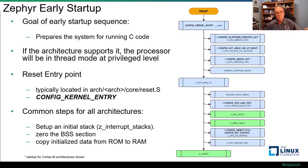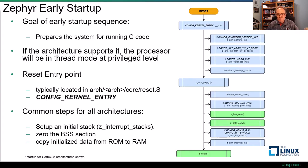The NXP LPC54114 also uses this hook to handle dual-core operation. The platform has an M0+ and an M4 core, and both cores run the same shared startup code but with different vector tables. The supplied z_arm_platform_init function determines which core is running and then handles the core state accordingly.